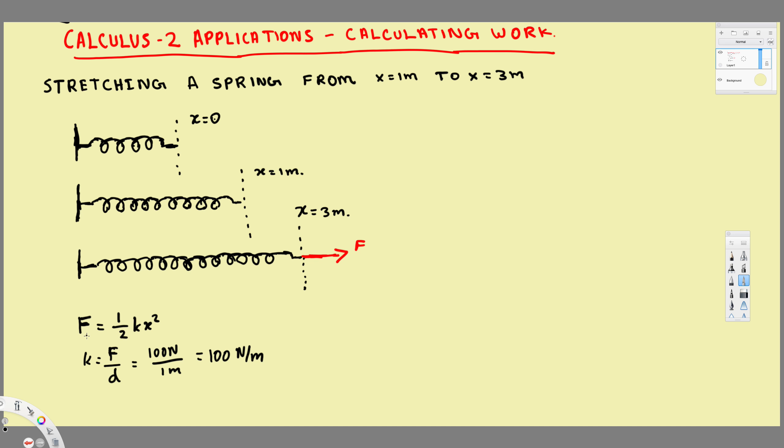Here we have the equation for the force, that is F = ½kx². Here k represents the spring constant. Also, it's provided that to stretch this one meter, 100 Newtons is required, so the spring constant is 100 Newtons per meter.